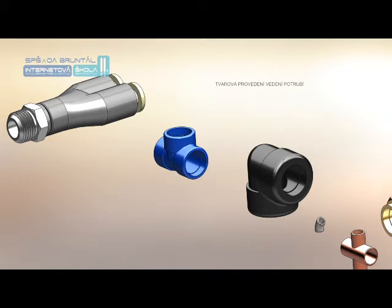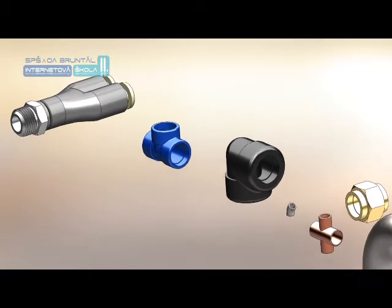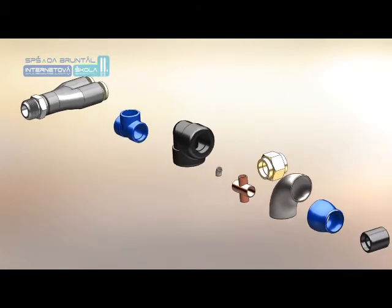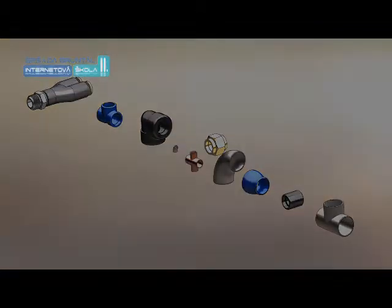Pro pevné vedení tlakové kapaliny se používají ocelové, bezešvé, normalizačně žíhané trubky z materiálu 11.353, 11.453, případně 12.011. Musí být bez okují, vnitřní průměr musí být vyčištěný a musí být nepoškozené.